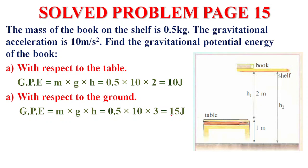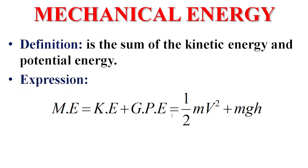The last form of energy is mechanical energy. Simply, we add up KE and GPE. Third form of energy, mechanical energy is the sum of kinetic energy and potential energy. The expression is ME equals KE plus GPE. KE is half mv squared, GPE is MGH.